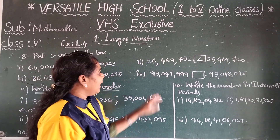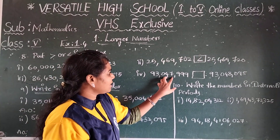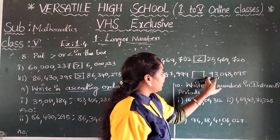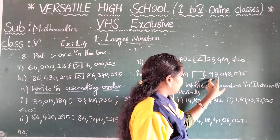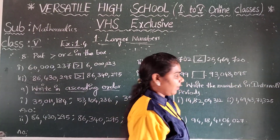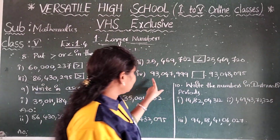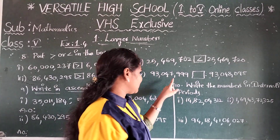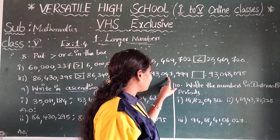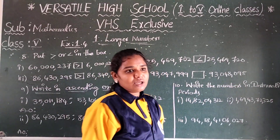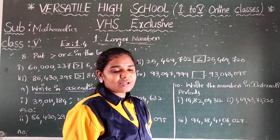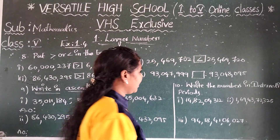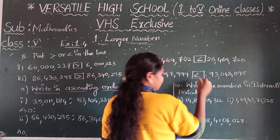Fourth pair: 93,047,999 and 93,048,095. Both have 93 millions. At the thousands place: 47,000 versus 48,000. 48 is greatest, so the first number is less than the second. Put the less than sign.